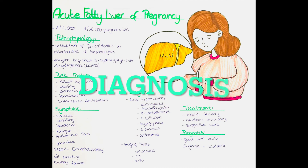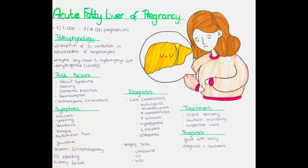How can we diagnose acute fatty liver of pregnancy? We can do different laboratory examinations. The laboratory findings typically show abnormalities in the blood count such as leukocytosis and thrombocytopenia, a mild to moderate increase in transaminases, increased bilirubin, hypoglycemia — so a low blood sugar — and a decreased albumin.